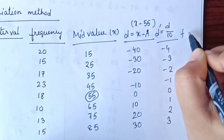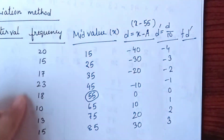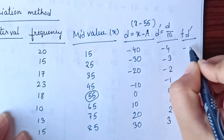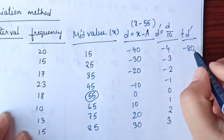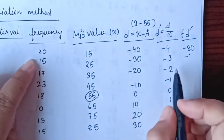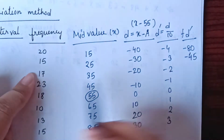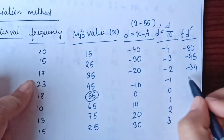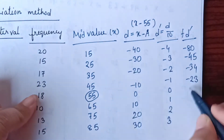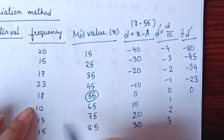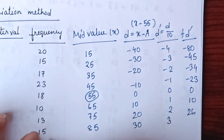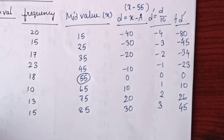After that, we find the column F D dash — the product of the frequency values and D dash. The values are: minus 80, 15 into minus 3 equals minus 45, 17 into minus 2 equals minus 34, 23 into minus 1 equals minus 23, 18 into 0 equals 0, 10 into 1 equals 10, 13 into 2 equals 26, 15 into 3 equals 45.